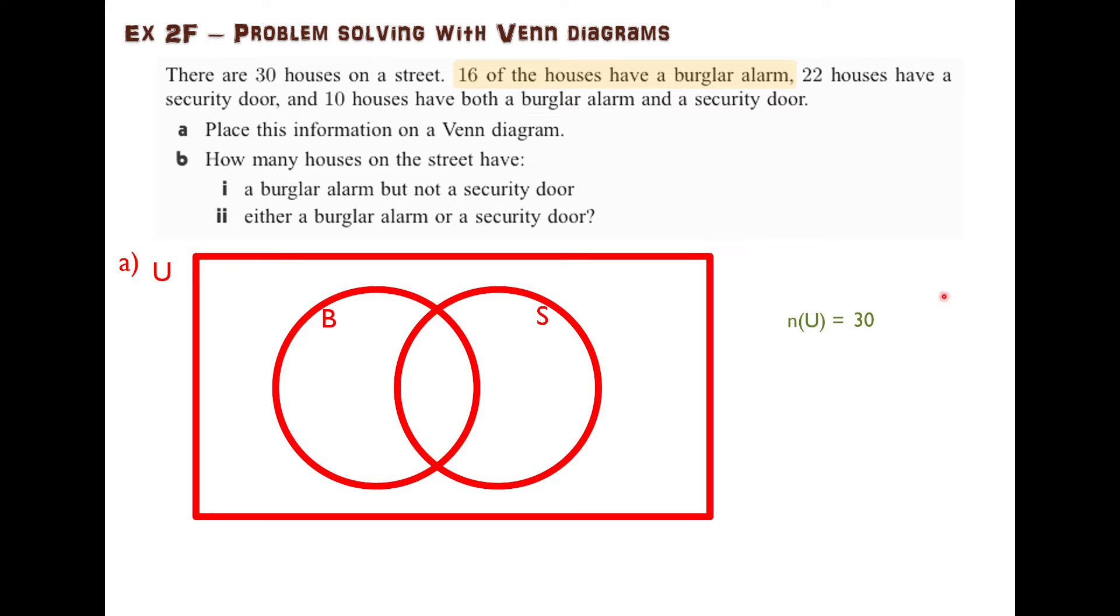Next, this fact says that 16 of the houses have a burglar alarm. So that is this circle here, the whole circle. Maybe some of the 16 have a security door as well. Maybe some only have a burglar alarm. But all of those count towards that 16 total. The number of elements in B is 16.